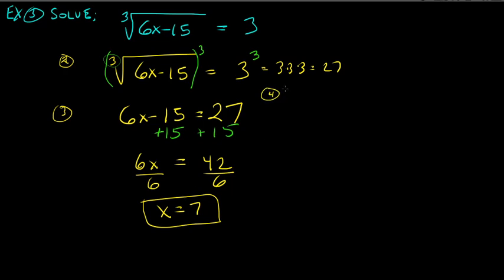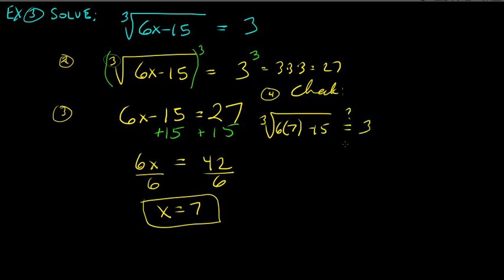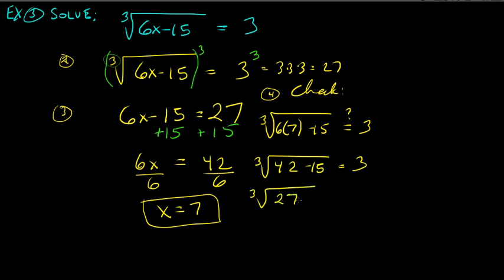Let's check by plugging back into the original equation: the cube root of (6 times 7 minus 15). That's 6 times 7 is 42, minus 15 is 27, and the cube root of 27 is 3. So 3 equals 3 — correct. The solution is x equals 7.